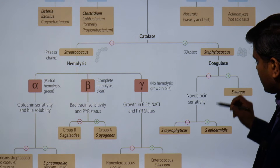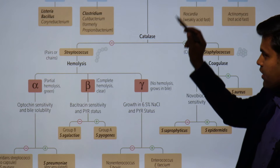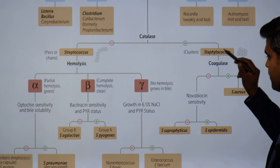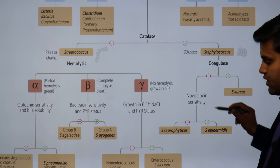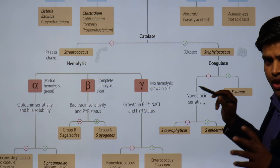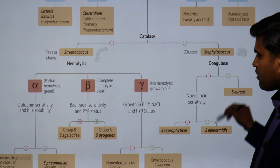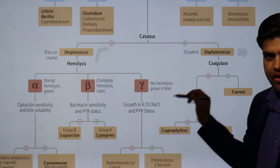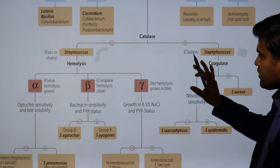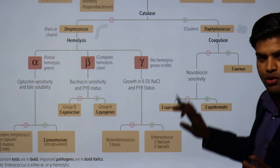So a gram-positive coccus in a cluster that is catalase-positive — if it is coagulase-negative and novobiocin-sensitive, it is Staphylococcus epidermidis. By correlating these four to five pieces of information, you are able to answer exam questions, and one question will certainly come from this topic.